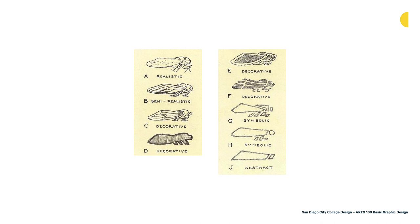In this cicada example, J is a good example of going too abstract. I think if you didn't see A through H, you wouldn't know that's a cicada. Something like F or G are a better sweet spot — they're simplified, they're abstracted, they're more symbol-based, but they're still identifiable as the cicada itself.